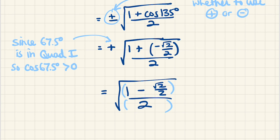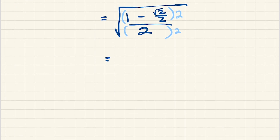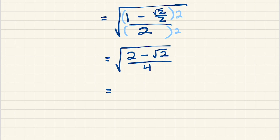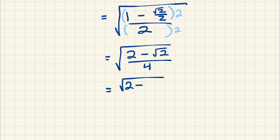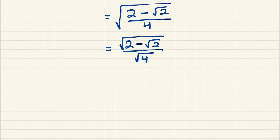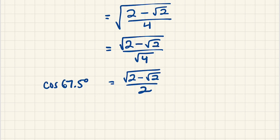Let's multiply the numerator and denominator by 2 — this is all occurring within the square root. Distributing the 2 in the numerator, we get 2 minus radical 2, and distributing the 2 in the denominator gives us 4. We can say this is the square root of 2 minus radical 2, all divided by the square root of 4, and the square root of 4 is 2. So there's our final answer — and this is the exact value of cosine of 67.5 degrees.